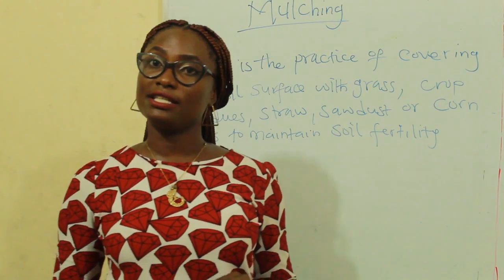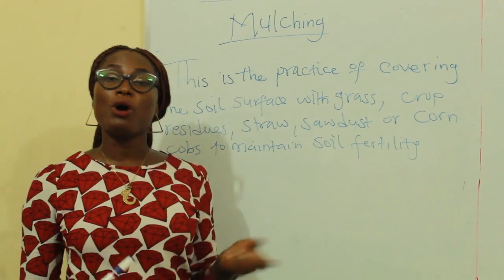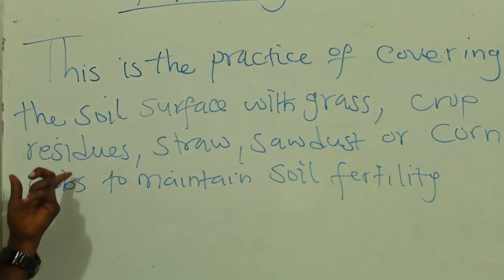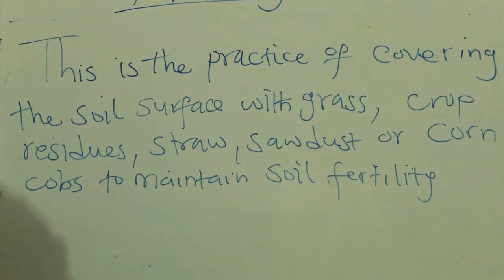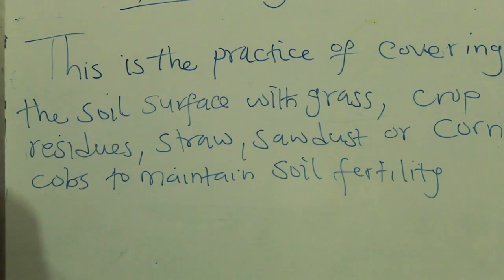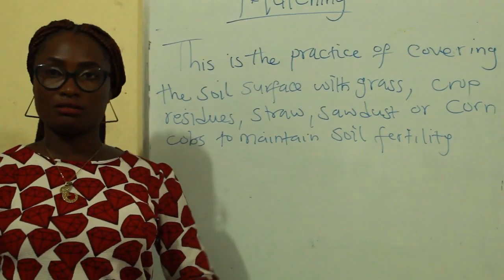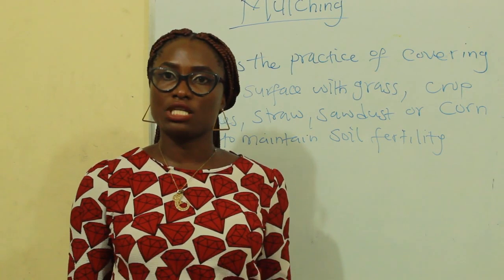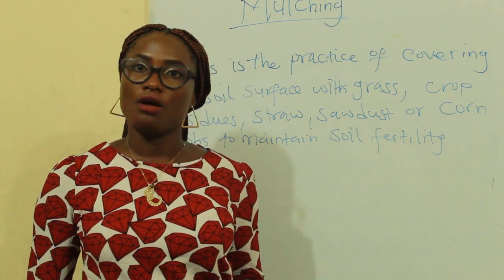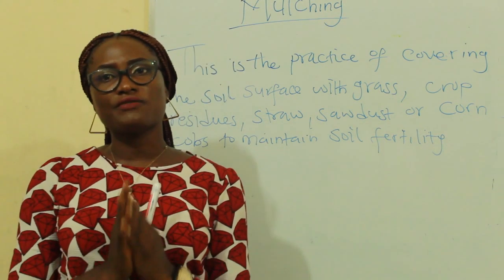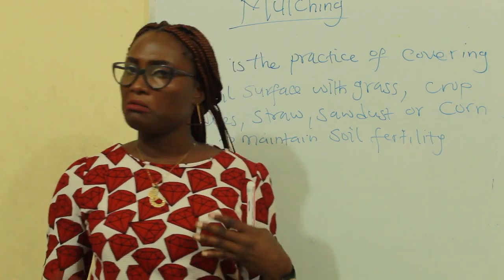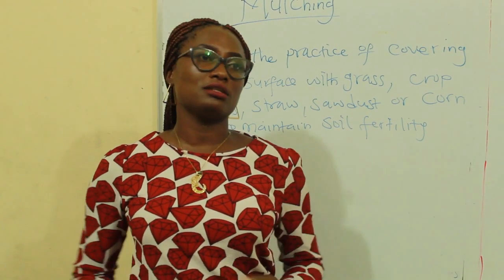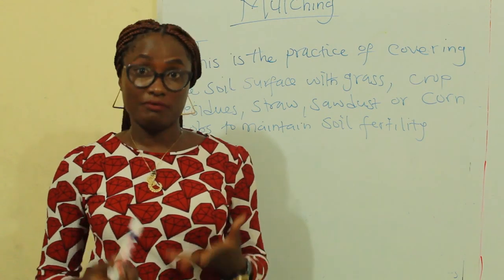Let's look at the last way of maintaining soil fertility, which is mulching. Mulching is the practice of covering the soil surface with grass, crop residues, straw, sawdust, or corn husks to maintain soil fertility. The farmer covers the soil with straw and crop residues; after some time these things decay and improve soil fertility. The advantage of mulching is that it is not very expensive — you can easily gather straw and crop residues, add them to the soil, leave them to decay, and they increase soil fertility. It's very cheap.